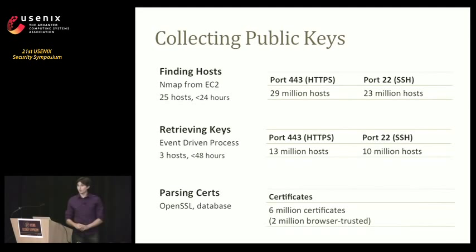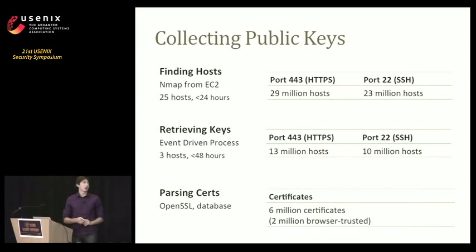In order to investigate these keys at a global scale, we started by performing a comprehensive scan of hosts on the internet for both TLS and SSH, ultimately finding 29 million TLS hosts and 23 million SSH hosts. This was really inspired by the SSL Observatory project, which had scanned the internet earlier. But instead of looking at the certificate authority ecosystem, we decided to look at the cryptographic keys in use.